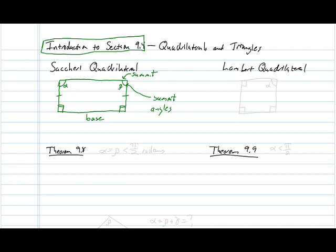Okay, and here I just have their measures listed as alpha and beta. Theorem 9.8 in this section says that alpha is equal to beta, so these two summit angles are congruent. And, more importantly, their measure is less than a right angle. So, those measures are less than π over two radians.